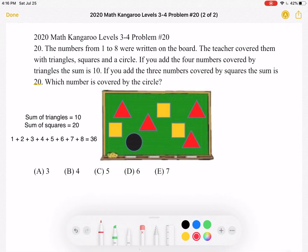To start, we know from the problem that if you add the four numbers covered by the triangles, the sum is 10. So if I add the numbers covered by these four triangles, I will get 10. We also know that if you add the three numbers covered by squares, the sum is 20.